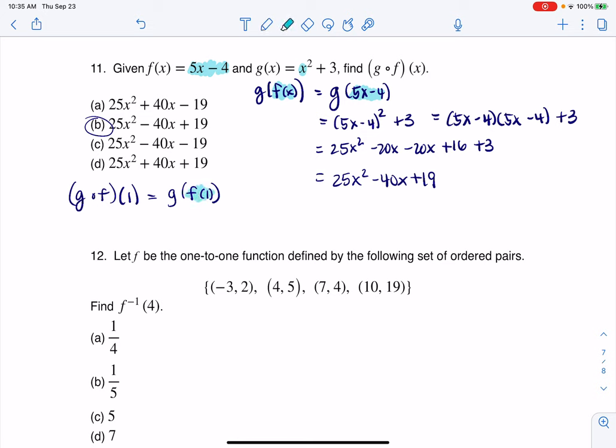And that would mean f of 1, I would substitute that into the x value for your f function. So this would be g of 5 times 1 minus 4. 5 times 1 is 5, 5 minus 4 is 1. This becomes just g of 1.